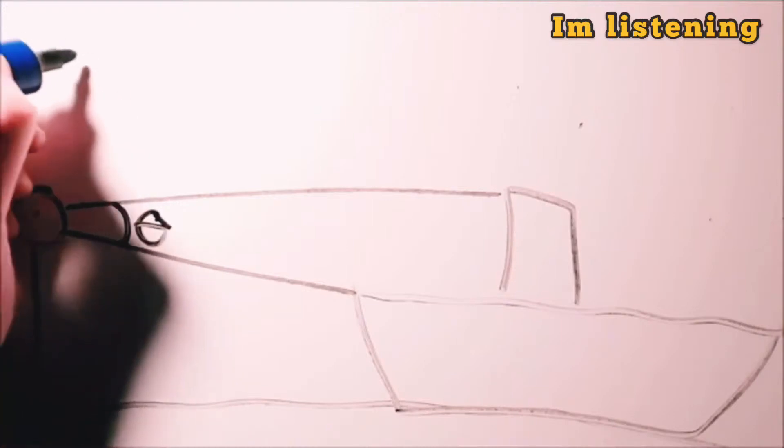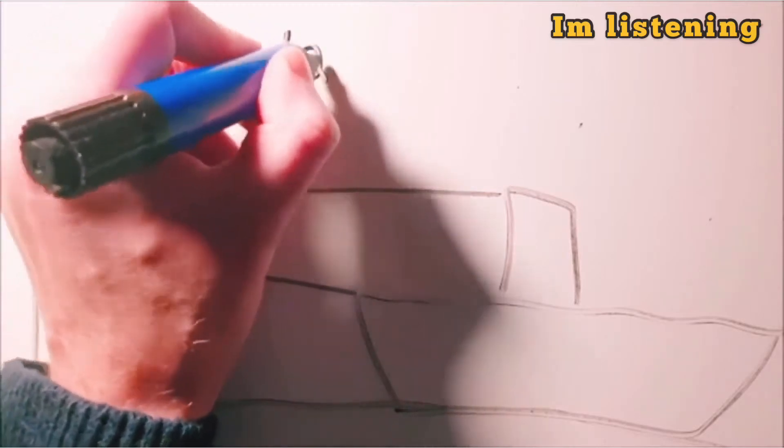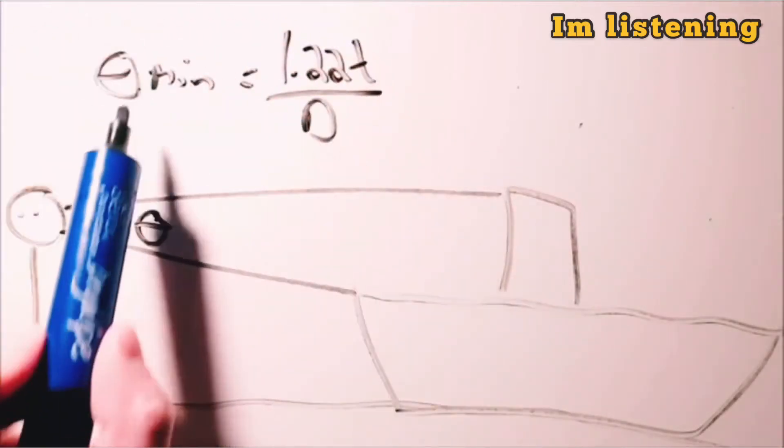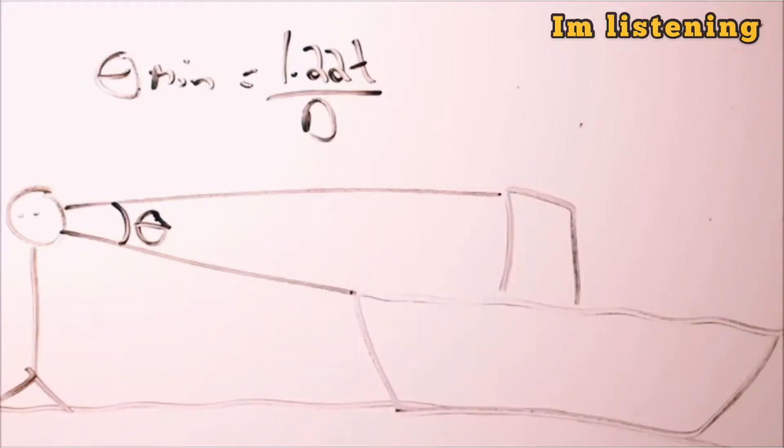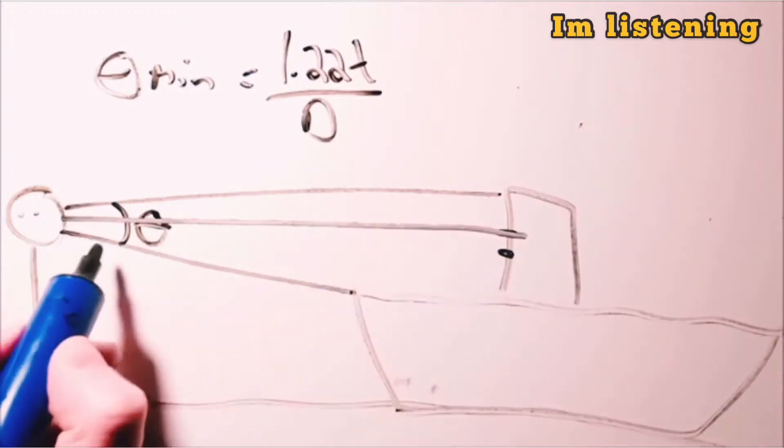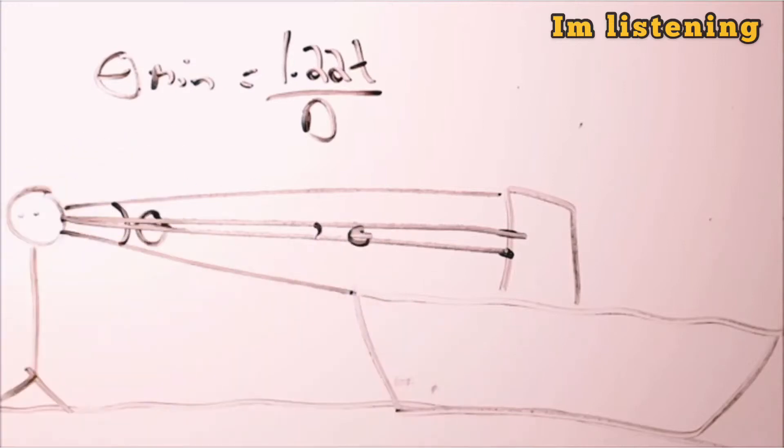Right? 1.22 lambda divided by D. If that's bigger than theta min, then I'll be able to resolve this part of the boat from this part of the boat. Maybe there's two little things here I want to resolve. And if the viewing angle between those two things is bigger than theta min, I can resolve them.